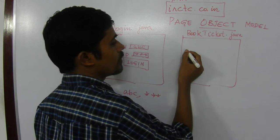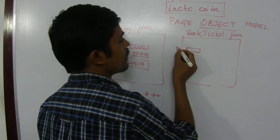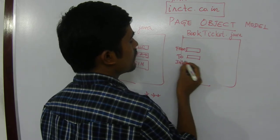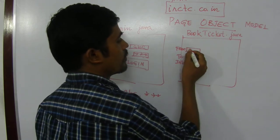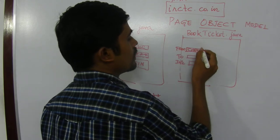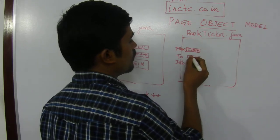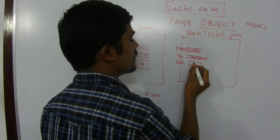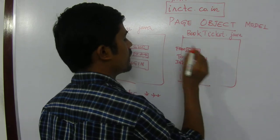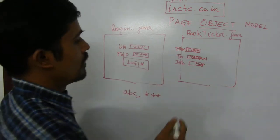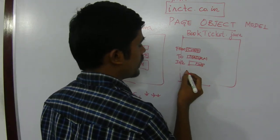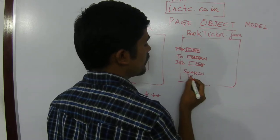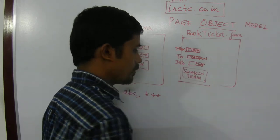In the book ticket dot java page, I am going to give what is my from city, what is my to city, and what is the date I am going to travel. Consider I am leaving from city Chennai and to city Madhuri, and a date — some date like 2017 or 2018. Once after entering this information, I am going to click on the search trains button.